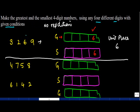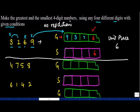Now, since 6 has already been used, I'm left with 9, 3, and 2. To make the greatest number, I put the largest digit first — that's 9. The second largest would be 6, but since no repetition is allowed, I skip it. So from the remaining digits 3 and 2, I put 3 next, then 2. So the greatest number is 9, 3, 2, 6.